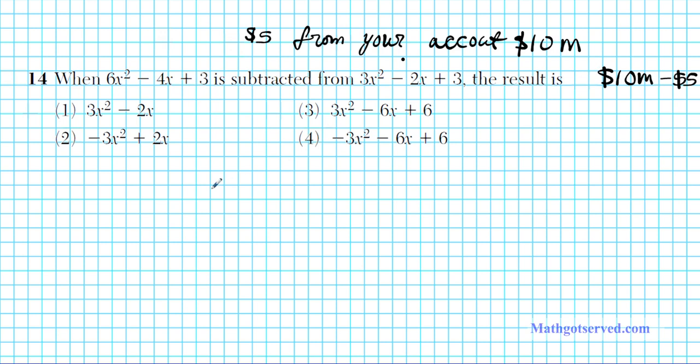So how do we write this? In mathematical form, it's going to be 3x squared minus 2x plus 3. From this, we'll subtract 6x squared minus 4x plus 3. So you don't set it up with the order as written. You have to reverse the order. So we have a minus here.